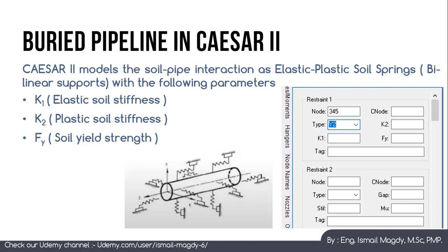If the forces on the pipe at any point are less than FY, then CESAR2 will automatically use the value of K1 as the stiffness, because the soil will be within the elastic range. While if the forces on the pipeline at any point exceed FY, then CESAR2 will automatically use K2 as the stiffness, because the soil will be within the plastic range. Of course, you can get the K1, K2, and FY values from your soil report.